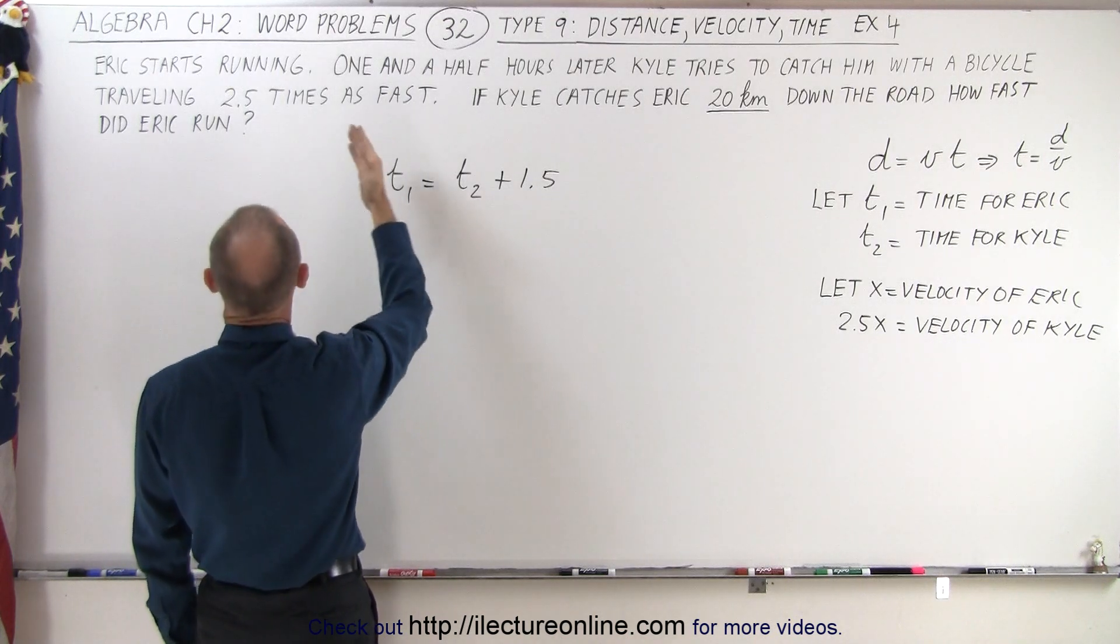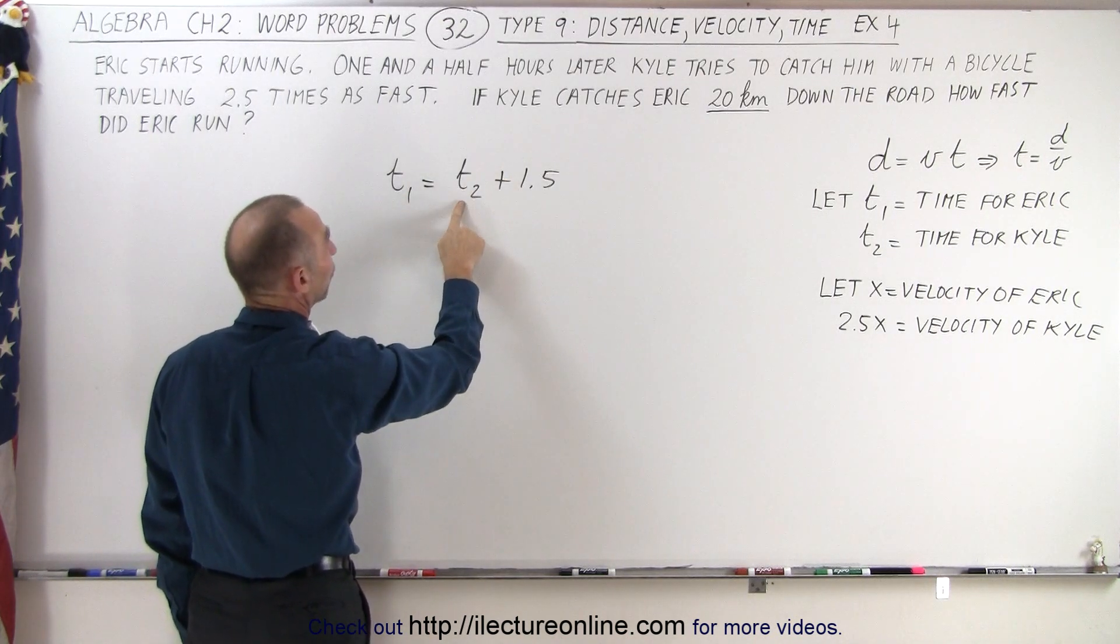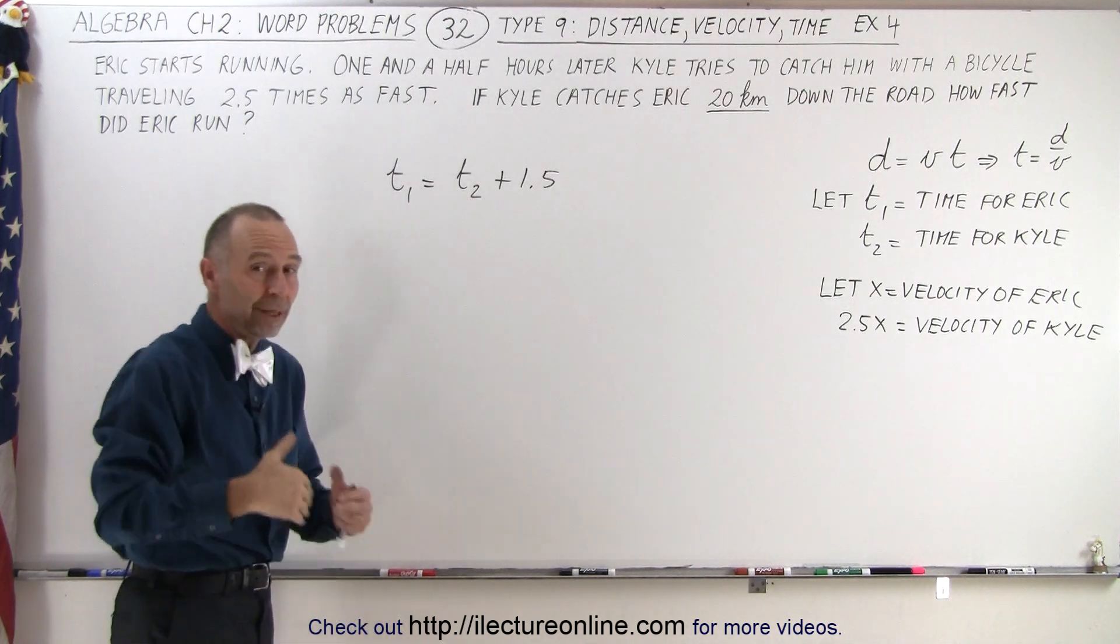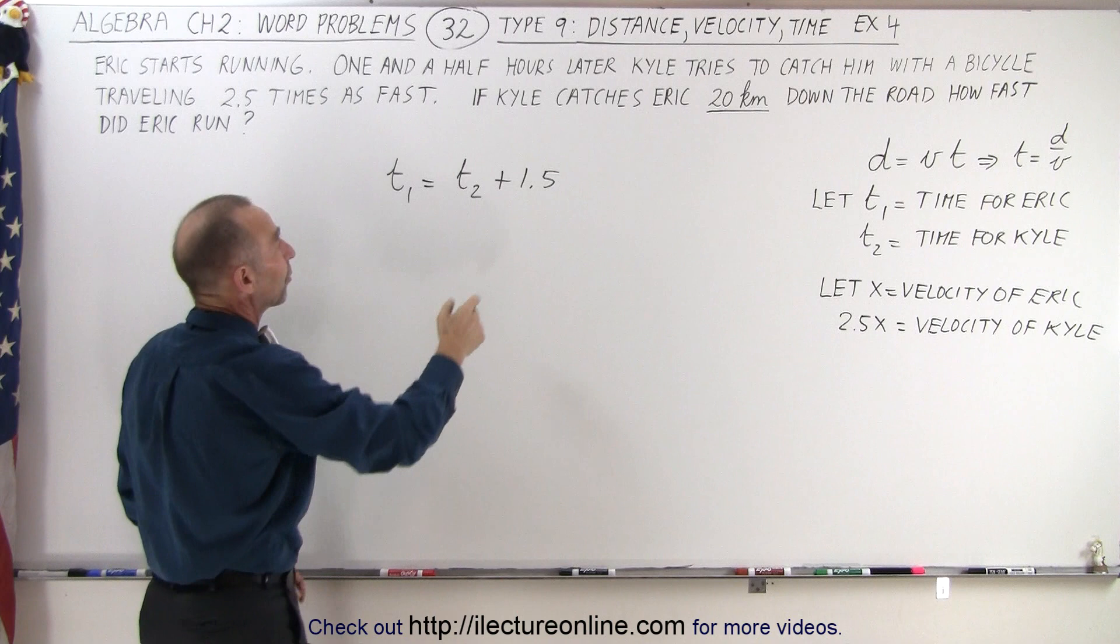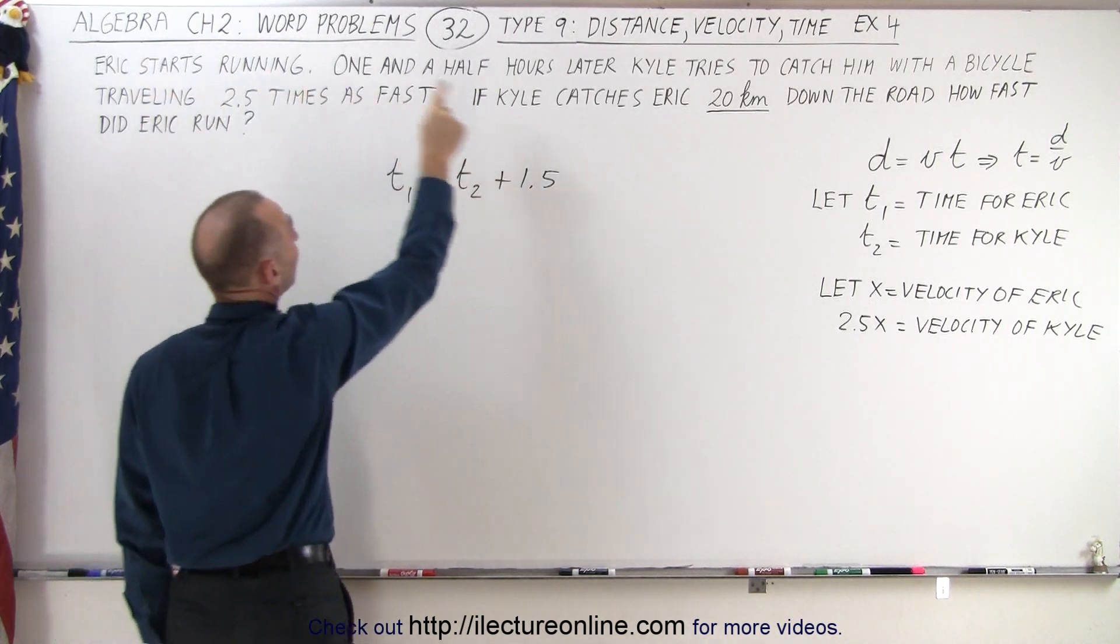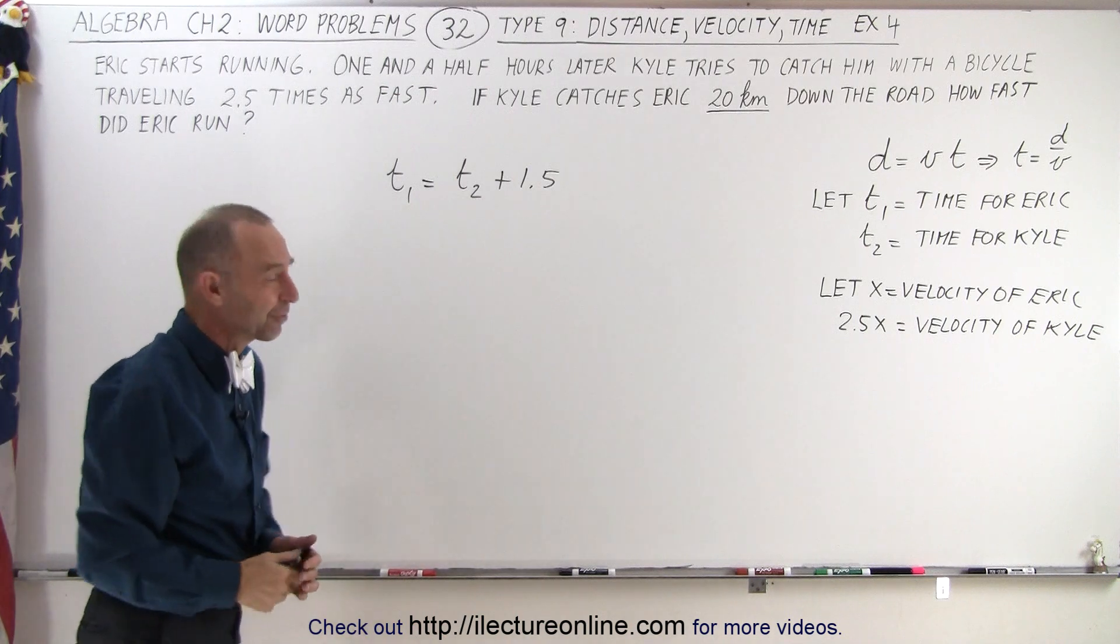If Kyle travels for one hour, then Eric will travel for two and a half hours. It'll be one plus one and a half. It's always going to be one and a half hours greater for Eric than it will be for Kyle, regardless of what the time for Kyle is.